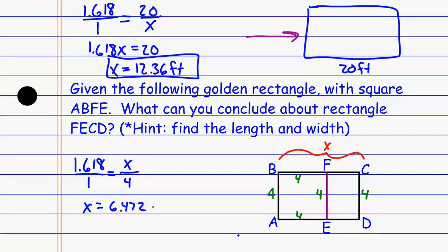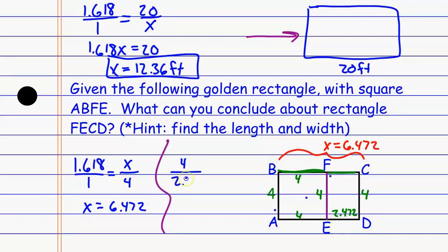Now I know that the entire side is 6.472, which means the little piece FC and the little piece ED — using segment addition, if I know this piece is 4, I can conclude that the remaining piece is 2.472 by subtraction. So that piece is 2.472. Now I want to check if this smaller rectangle has the golden ratio, so I compare the long side to the short side: the long side is 4 and the short side is 2.472.